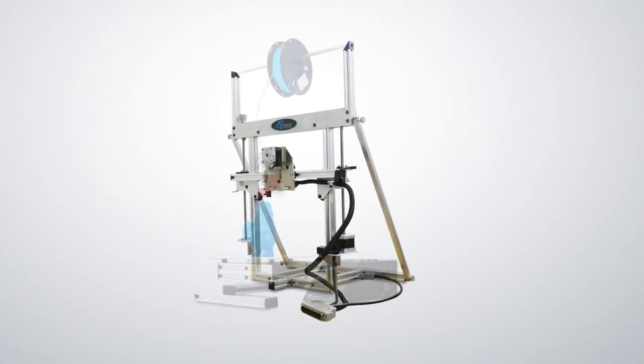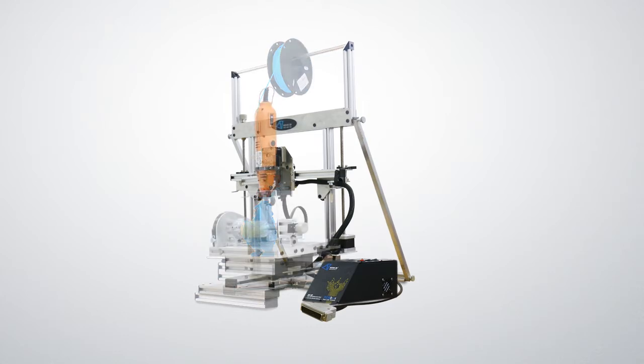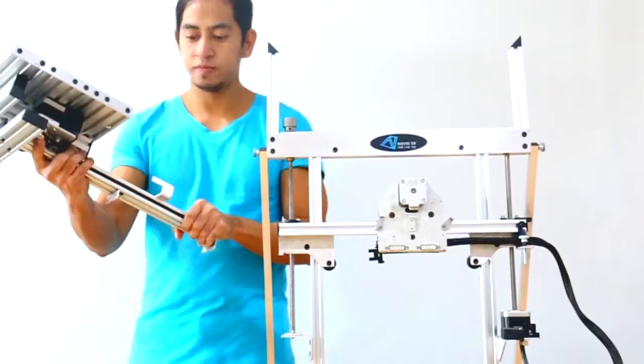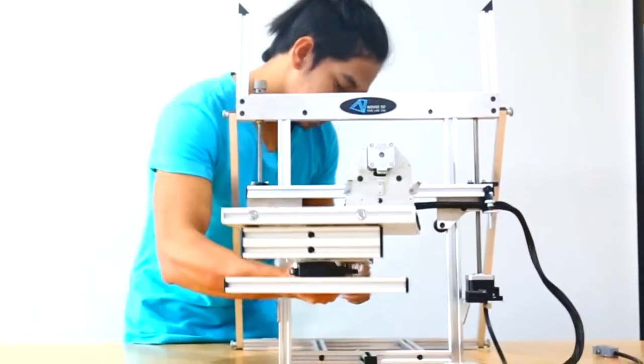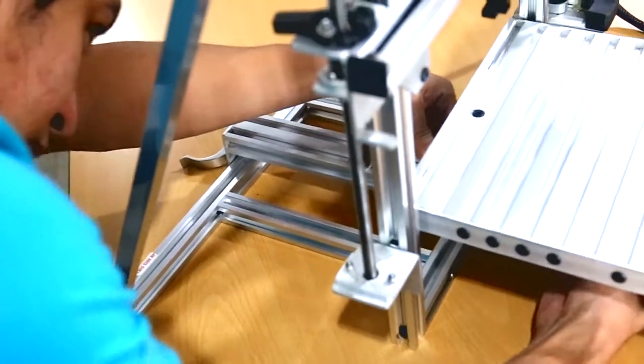After you have successfully set up the 106 base for a stand-alone CNC module or successfully removed some parts from the model 106 3D printer, next thing to do is to attach the CNC mill bed to the base frame and secure it by locking the two camlock levers.